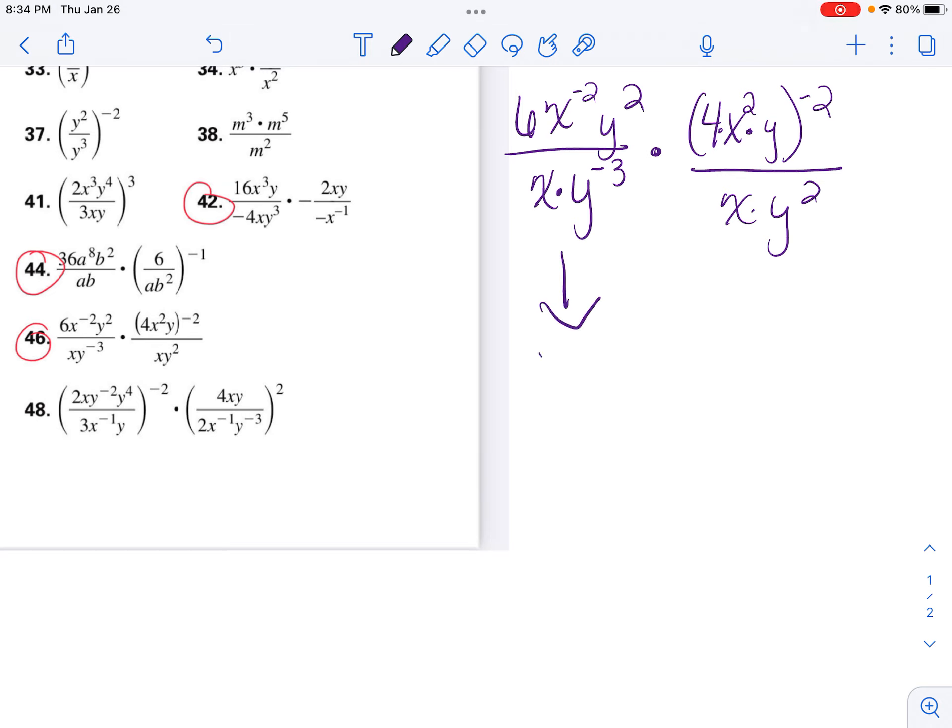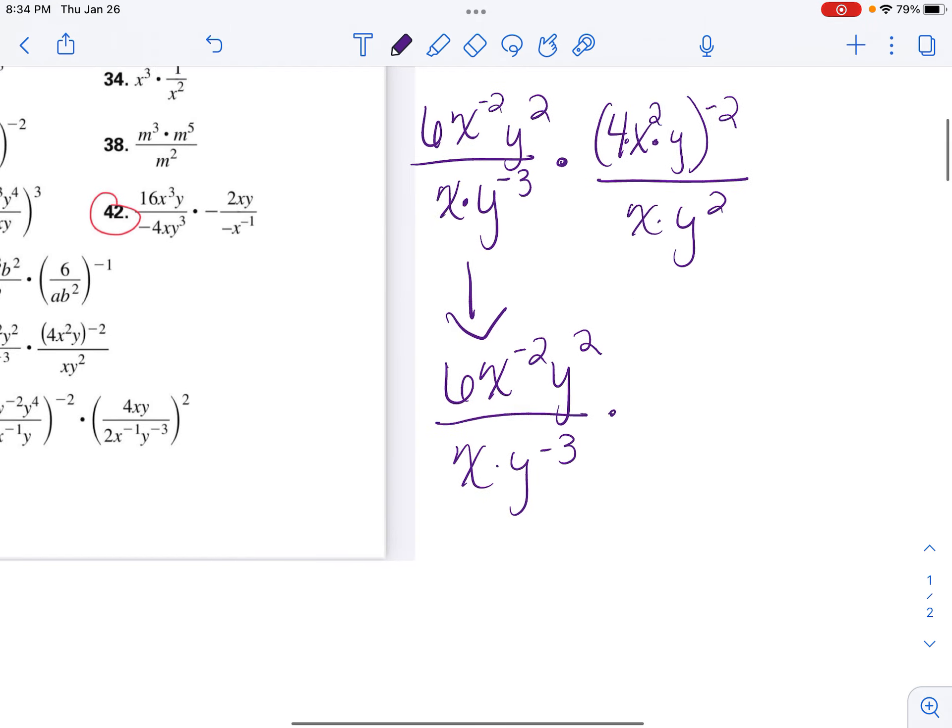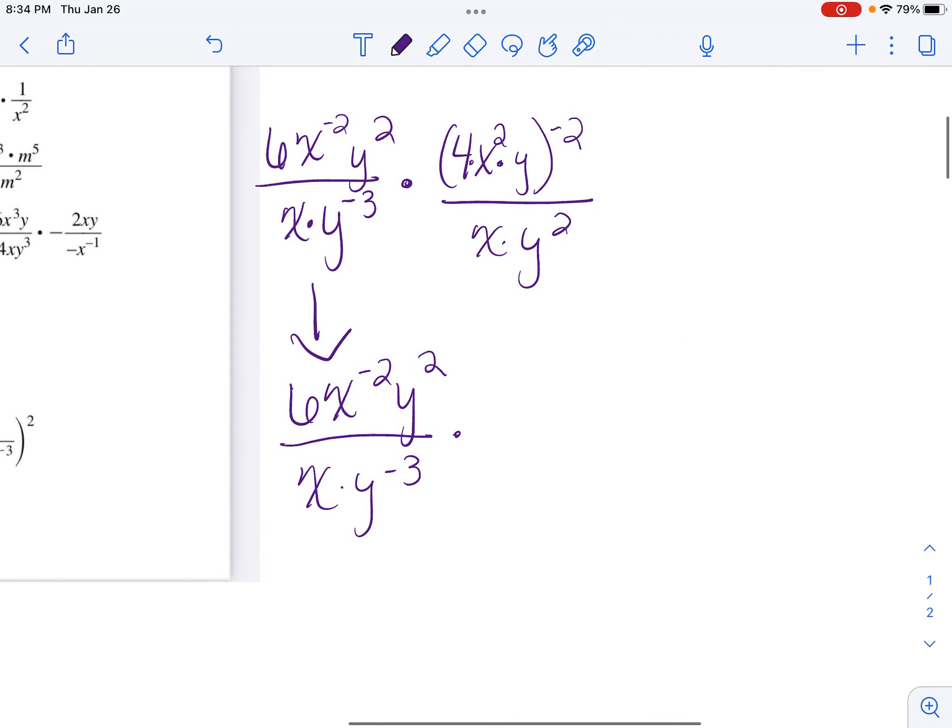So first I'm going to bring this down, and I'm not going to do anything yet to this first fraction. I'll deal with it in just a minute. So now we're going to distribute this negative 2 to everything, which means we're multiplying.